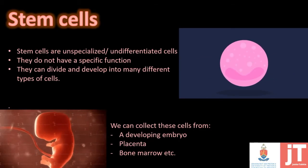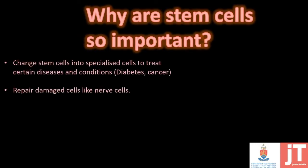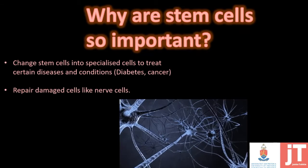What makes stem cells so important, and why do we need to know so much about them? Stem cells can change into any specialized cell, which will help us treat incurable diseases and conditions like diabetes or even cancer. It also allows us to repair damaged cells like nerve cells. Nerve cells cannot repair themselves on their own, so if we can manipulate the stem cell, we will have the ability to cure someone who is paralyzed and help them to walk and move again.